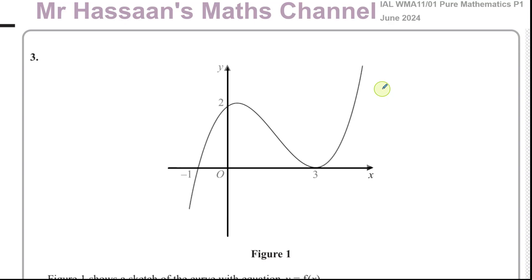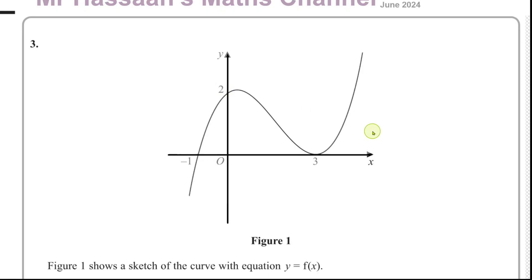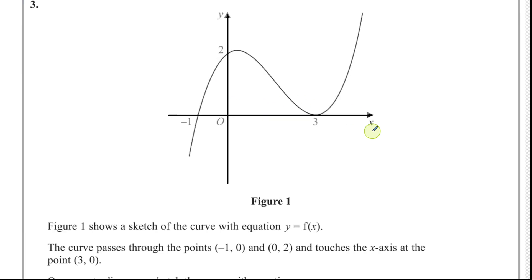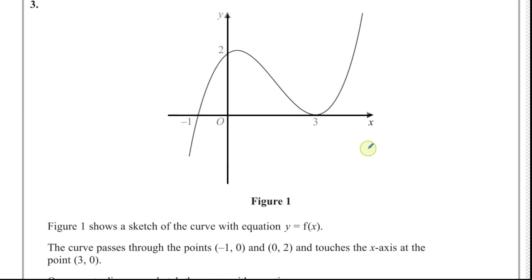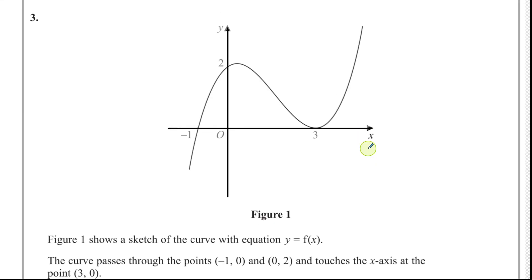This question is about transformations of graphs. We have a picture or sketch of a graph with the equation y equals f of x. They don't tell us the actual equation of the graph — we can see it looks like some sort of cubic graph. The curve passes through the points minus 1, 0; zero, 2; and 3, 0.